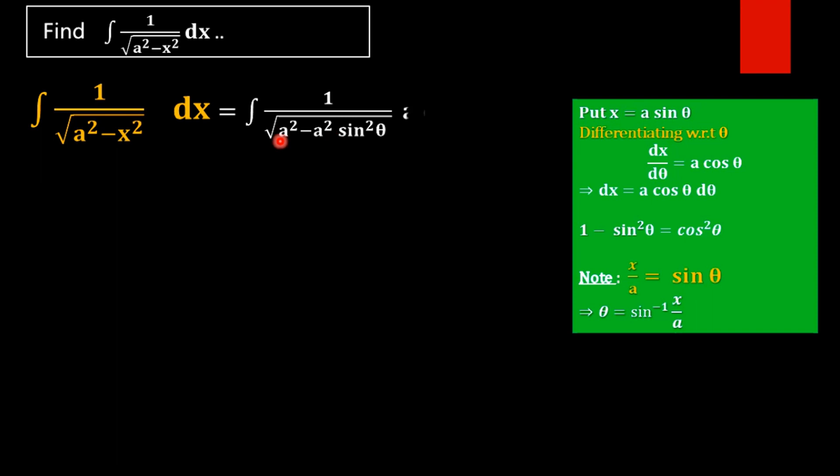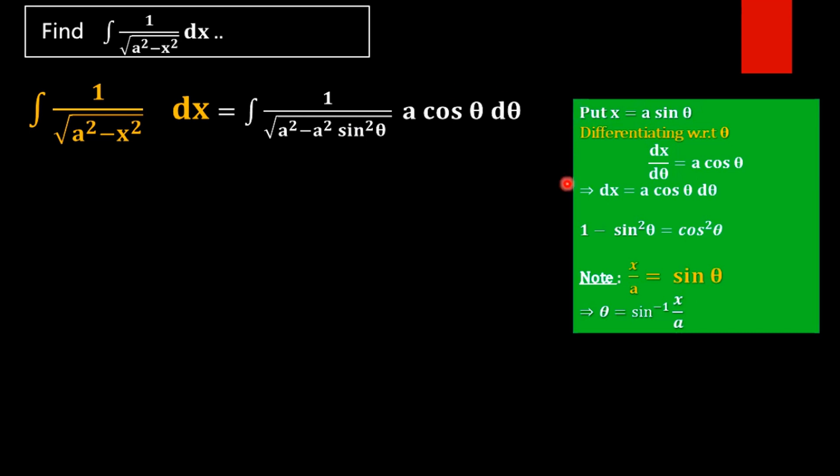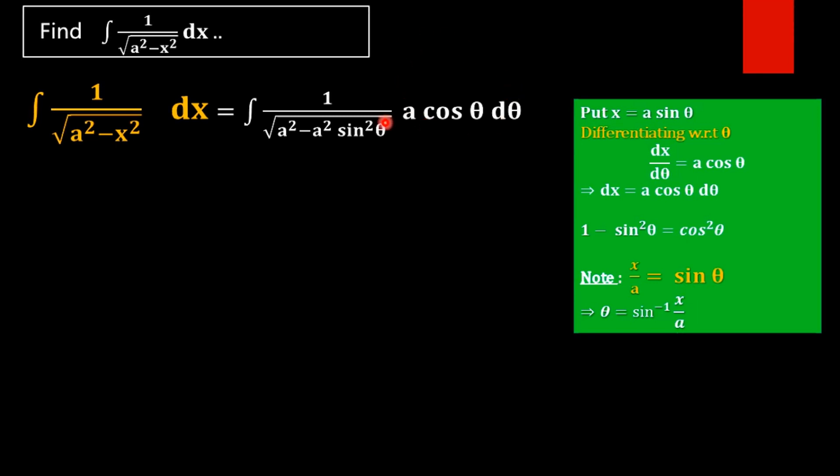That is, x equal to a sin theta. Then x square is a square sin square theta. Now, dx equal to a cos theta d theta. Then we can rewrite this dx as a cos theta d theta.